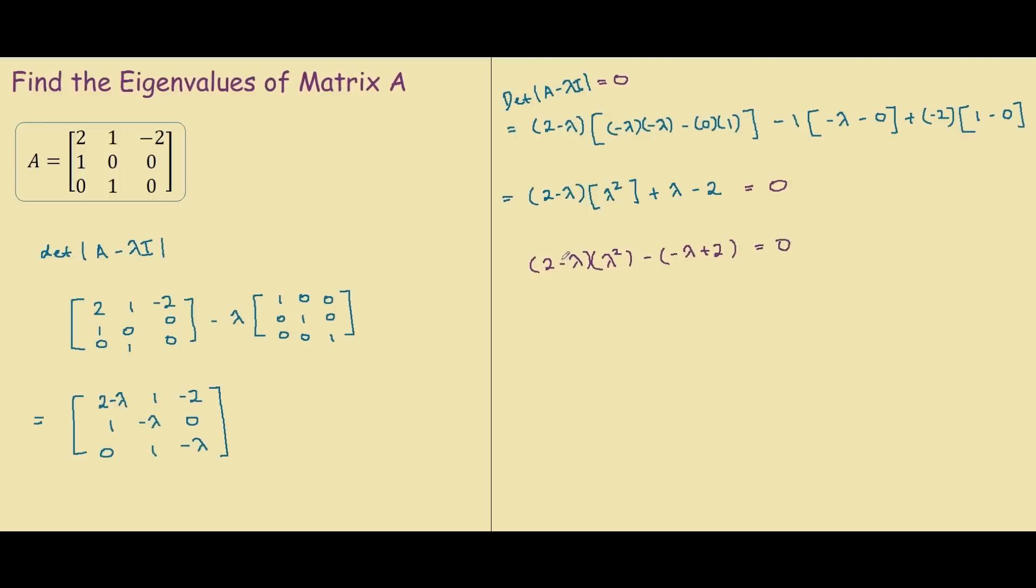So because this bracket and this bracket is the same, we can factor it out into 2 minus lambda, outside of lambda squared minus 1 equals 0. And then we can further factor this into lambda plus 1 lambda minus 1 equals 0.